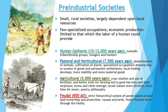Pre-industrial societies are small, more rural, and more dependent on local resources. There are no airplanes, cargo ships, or steam-powered trains bringing goods back and forth, so everything is very local. You also have fewer specialized occupations because the economy is not that well-developed. Economic production is limited to what humans use themselves, with fairly undeveloped tools.